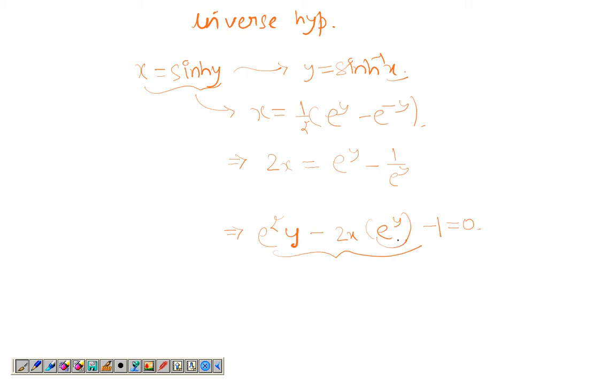Which is a quadratic in e to the power y. Let's say this is p. So the equation is something like p squared negative 2xp negative 1 equals 0. So p comes out to be, the roots basically come out to be x plus or minus root x squared plus 1.